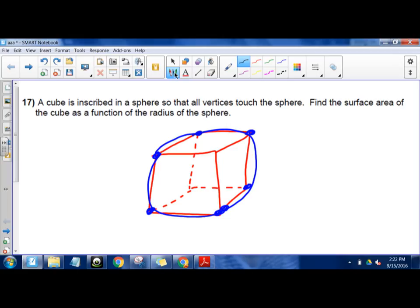So basically we have a cube inscribed in a sphere so that all vertices touch the sphere. So I've got my blue sphere, I've got my cube inside there. Find the surface area of the cube as a function of the radius of the sphere.